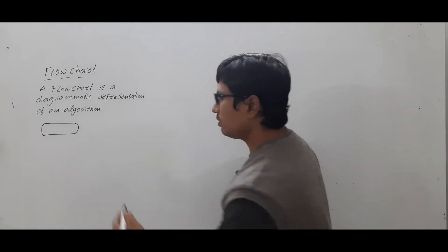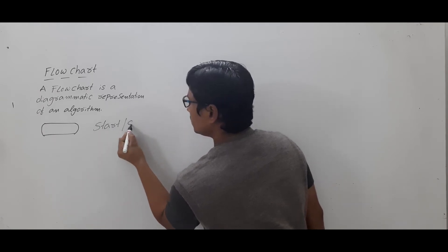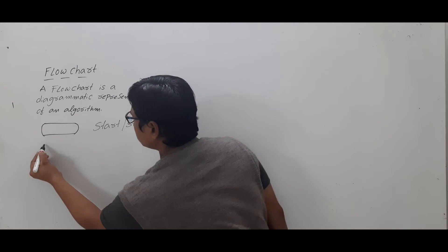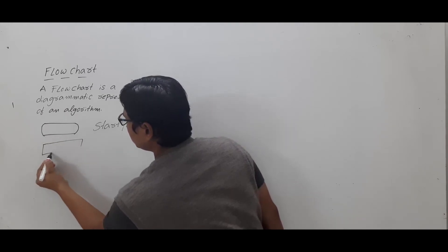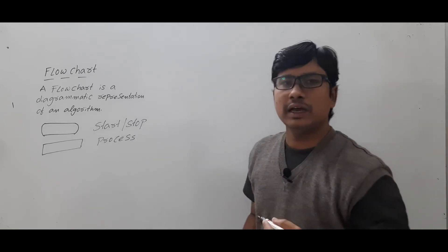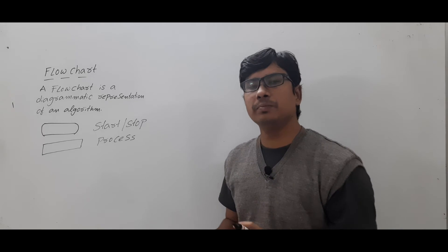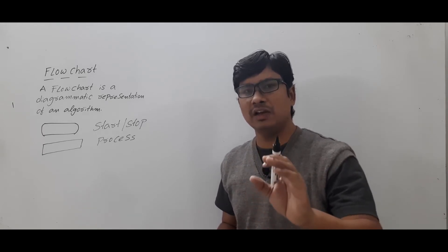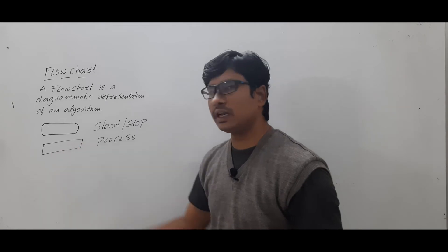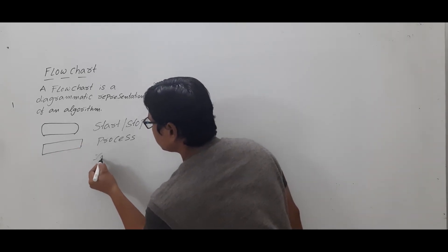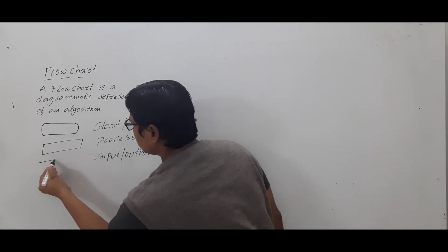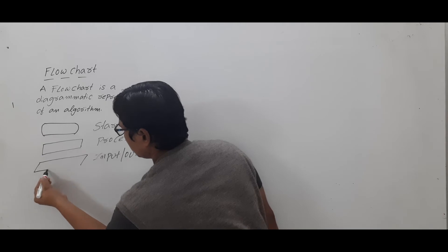Now let me discuss what symbols are used in the flowchart. We use an oval for representing start and stop, because every flowchart should have a start and a stop — they act as terminals. Similarly, to represent any process we use the rectangle symbol. For example, if you want to perform an arithmetic operation like c = a + b, meaning you add the values in a and b and store the result in variable c, you represent that using a rectangle.